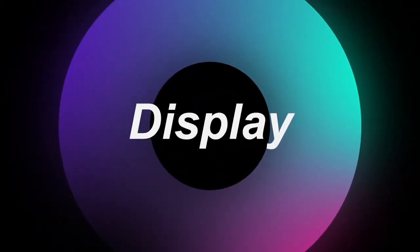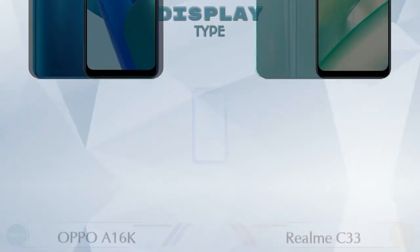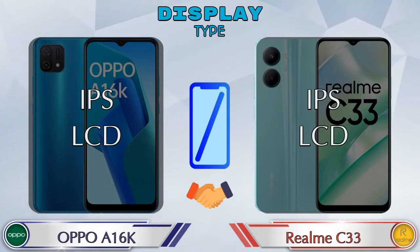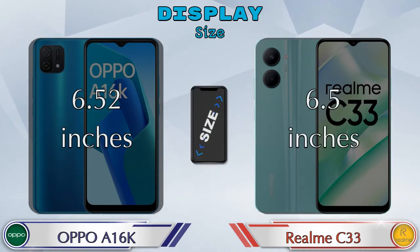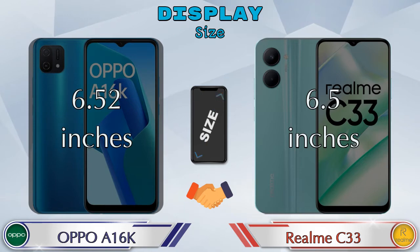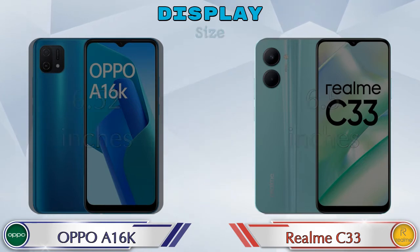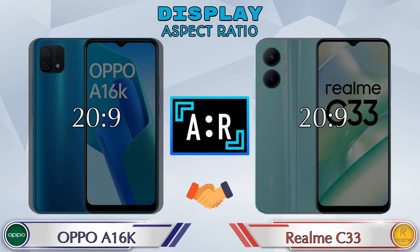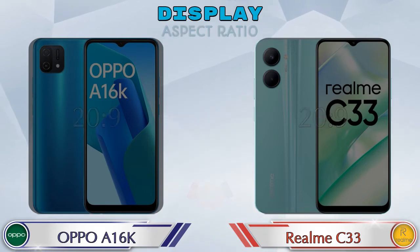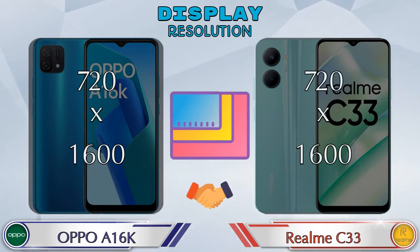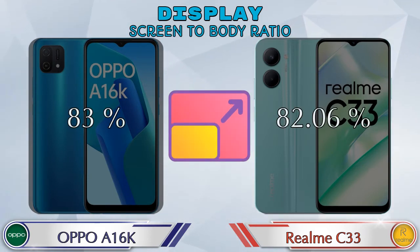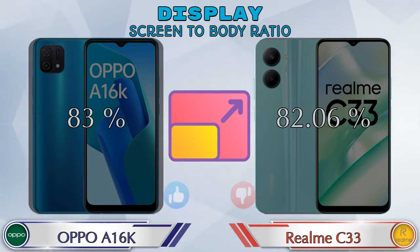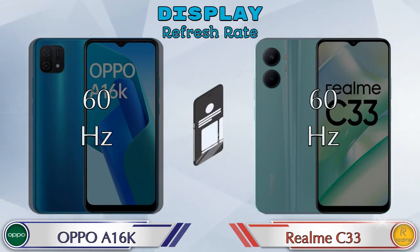Let's see the information about display. Both phones have the same IPS LCD display. Display size: the A16k has 6.52 inches and the Realme C33 has 6.5 inches. The aspect ratio is the same in both phones at 20:9. Both phones have the same 720 by 1600 resolution. Screen-to-body ratio: the A16k has 83% while the Realme C33 has 82.06%. Both phones have a 60Hz refresh rate.